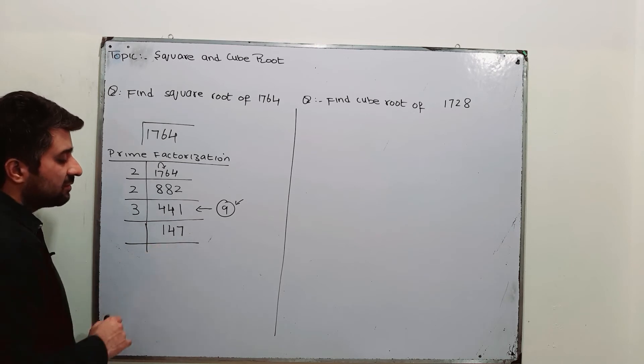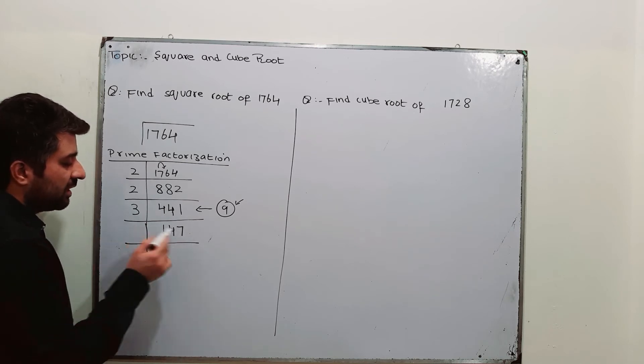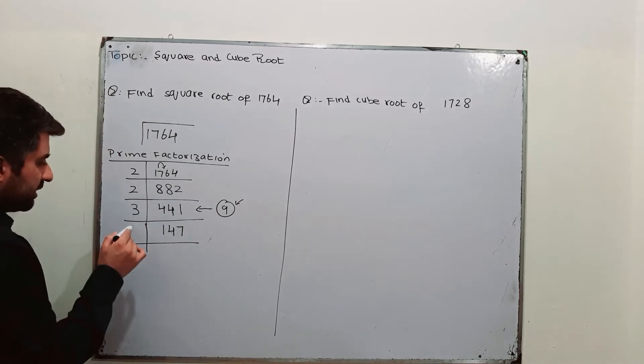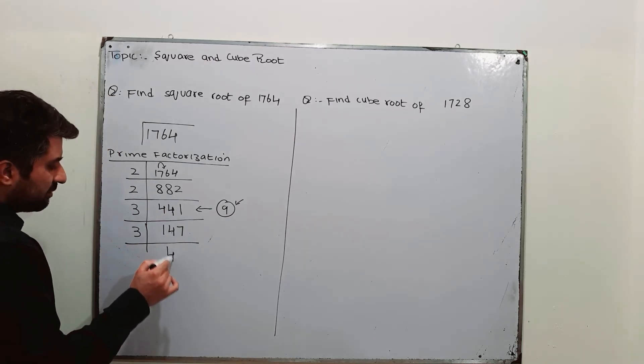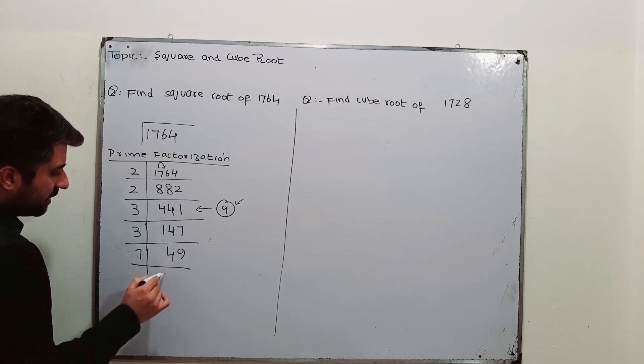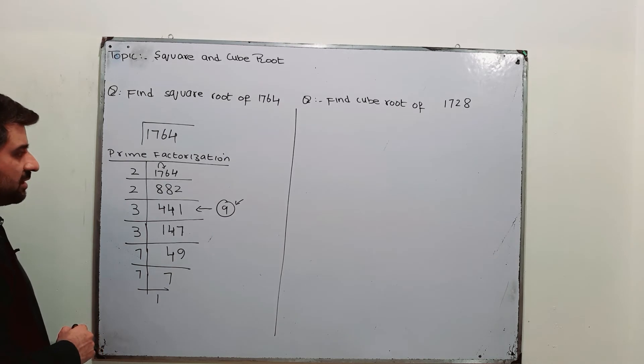Again, this is divisible by 3. 7 plus 4, 11 plus 1, 12 and 12 is divisible by 3. You can divide this by 3. 3, 4 times 12. It is 14. 2 will be carried to the next one. It becomes 27. 3, 9 times 27. 7, 7 times 49. 7, 1 times 7.